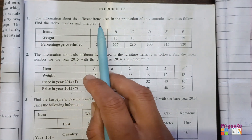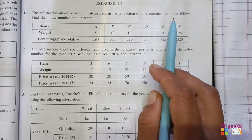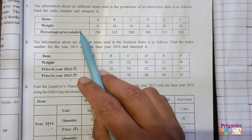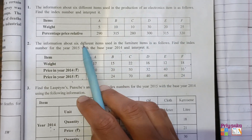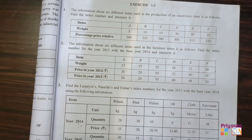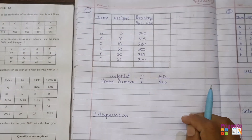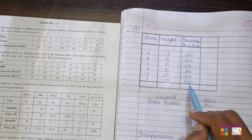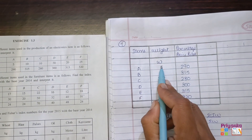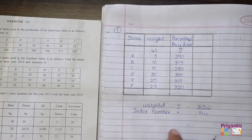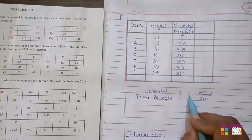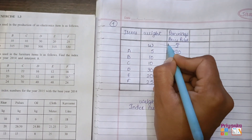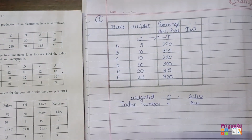Now let's start with the first question from Exercise 1.3: 'The information about six different items used in the production of an electronic item is given. Find the index number and interpret it.' Different items A to F are given with different weightages and percentage price relatives. Weight is denoted as W and percentage price relative as i. The formula to use is I = σiW / σW.